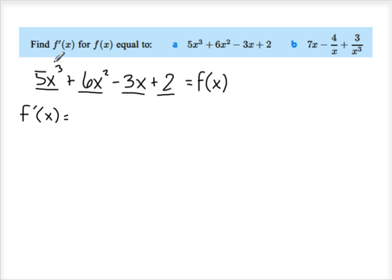So for 5x³, that means that we're going to take this 3, which is our exponent, multiply it to the 5, which gives us 15. We have our x still, and we're going to drop this exponent by 1. So we think 3 - 1, which gives us 2, so we have 15x² for that first term.